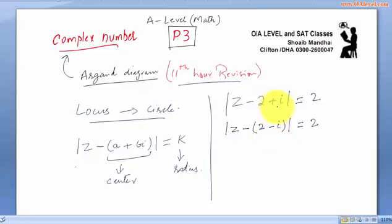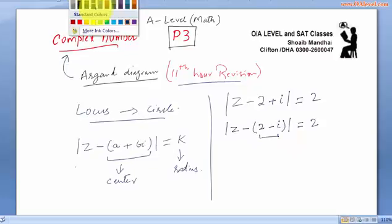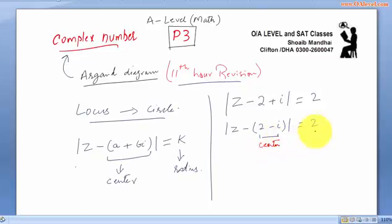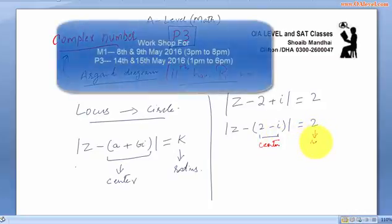The positive i becomes negative because we have taken negative sign as a common value. This shows this is the center of a circle and this represents the radius.